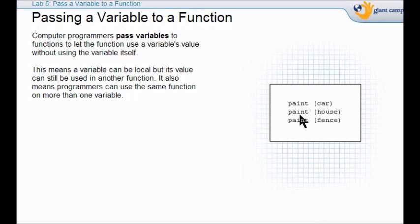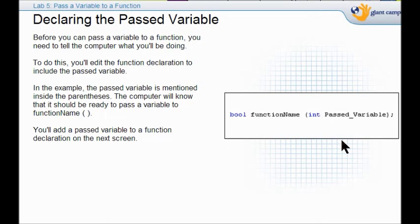In this case, you can paint the car, or you can paint the house, or you can paint the fence. So this is what it looks like. Right here is where the past variable goes. And this is the other function. All you have to do is you just edit the function declaration, and you include the past variable. So now the computer knows to pass this on into this function. So it passes this into that.